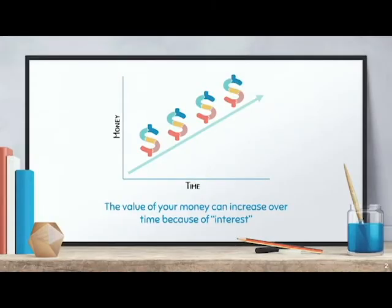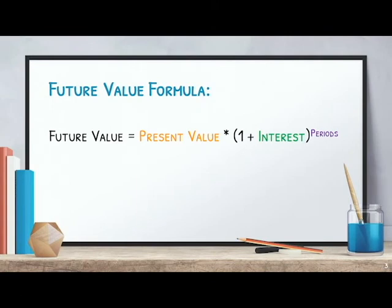If you invest your money into an account that earns interest, it's going to increase over time. And the way that we're going to figure this out is by using a formula. We are going to calculate the future value of a one-time investment by taking the present value of your money and multiplying it times one plus the interest rate, then to the exponent of the amount of periods.